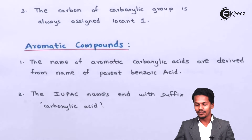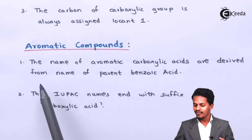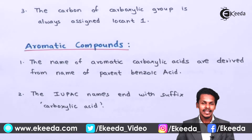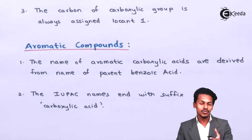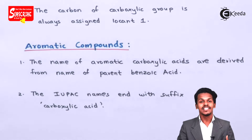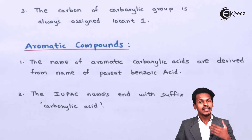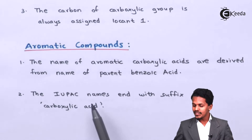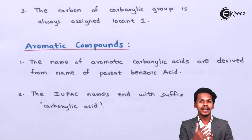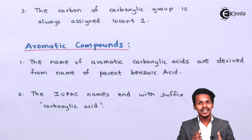For aromatic carboxylic acids, the name is derived from the parent benzoic acid. When a COOH group is attached to a benzene ring, the compound is called benzoic acid, which serves as the parent name. Additionally, the IUPAC name for aromatic carboxylic acids ends with the suffix 'carboxylic acid.'